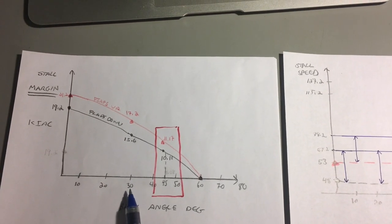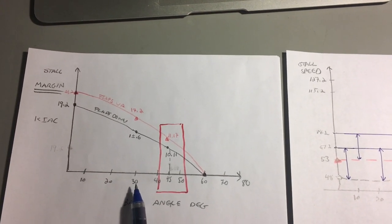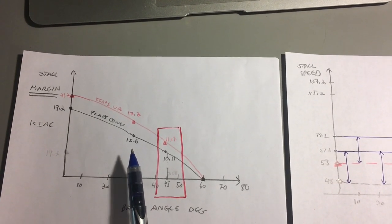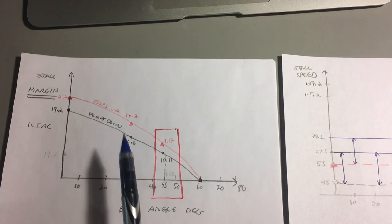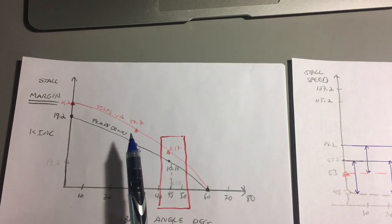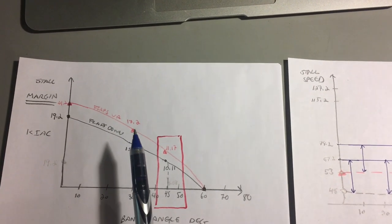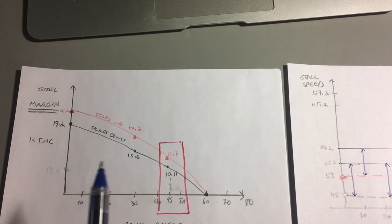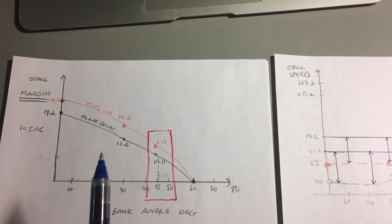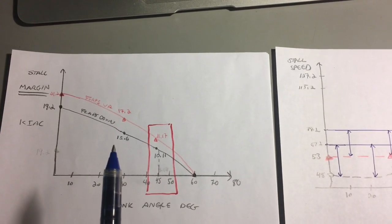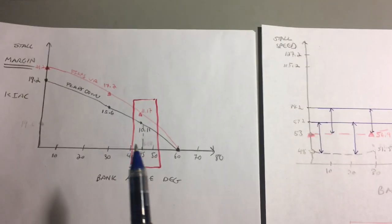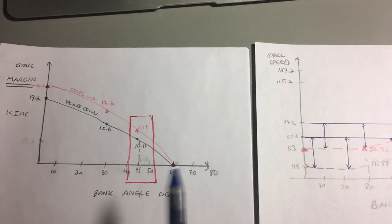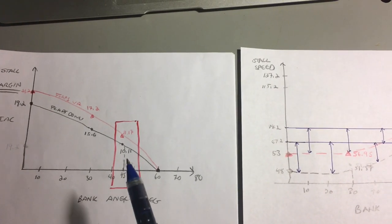Here's the magical 30 degrees bank angle and you can see at 30 degrees we've got 15.6 for the flaps down and 17.2 knots for the flaps up in terms of airspeed we could lose before we stall. That's a tremendous buffer. There's no reason why the buffer needs to be that big, and in fact I've called out the 45 degree bank angle and put a red box around it to basically bust this myth.